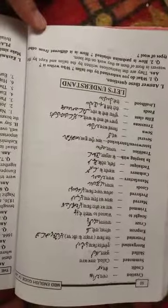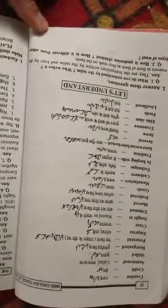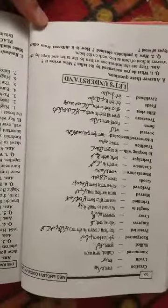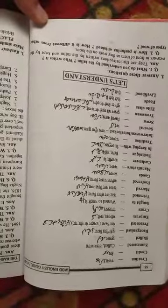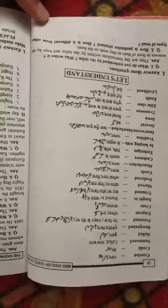Subject: English. Today's topic is question and answer of the Kashmiri shawl lesson. What do you understand by the taleem? Who wrote it? They are the instructions written by the taleem and kept by weavers in front of them as they work. Question number two: How is pashmina obtained?